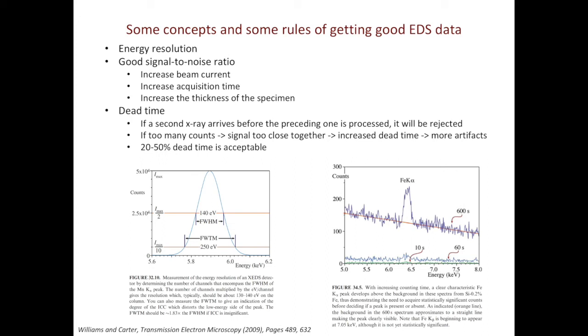However, when you have too good signal-to-noise ratio, it's not a good thing. You will run into a problem of dead time. It takes time for computer to process X-ray data. If the second X-ray hits the detector before the computer is able to finish processing the first signal, the second signal will be discarded. Therefore, if we have too many counts, then the signals will be too close together and this will increase the dead time. Increased dead time leads to more artifacts. So what we want is a good balance of signal-to-noise ratio and dead time. Usually, 20 to 50% dead time is acceptable.